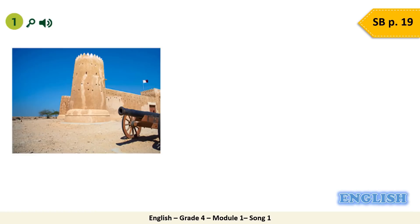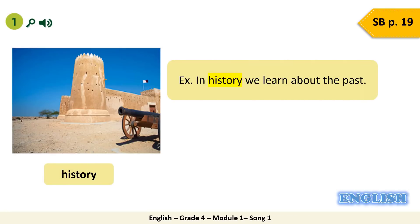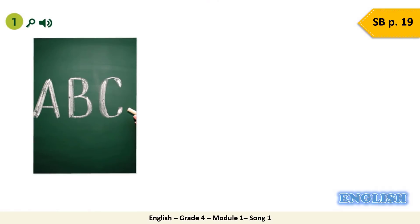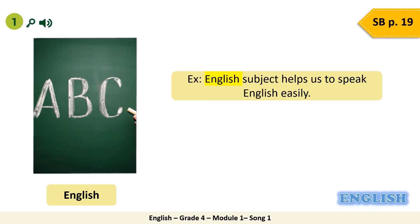Pay attention at this picture. What do you think? What is the subject? Very good. It is history. In history, we learn about the past. Can you tell me the part of speech of the word history? It's correct — the part of speech is noun. Now look at this. Can you guess the subject? Very good. It is English. English subject helps us to speak English easily. Can you tell me the part of speech of the word English? Good job. It is a noun.